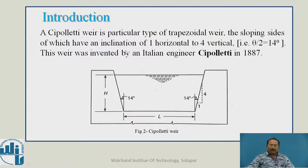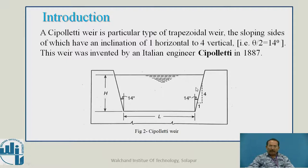What is the Cipolletti weir? It is a particular type of trapezoidal weir, or we can say it is a combination of a rectangular weir as well as a triangular weir. If you draw a vertical line, it becomes rectangular, and this sloping portion between the vertical lines forms triangular portions 1 and 2. So it is a combination of rectangular as well as triangular. It is a trapezoidal weir where the sloping sides have an inclination of 1 horizontal to 4 vertical, and this weir was invented by an Italian engineer, Cipolletti, in 1887.